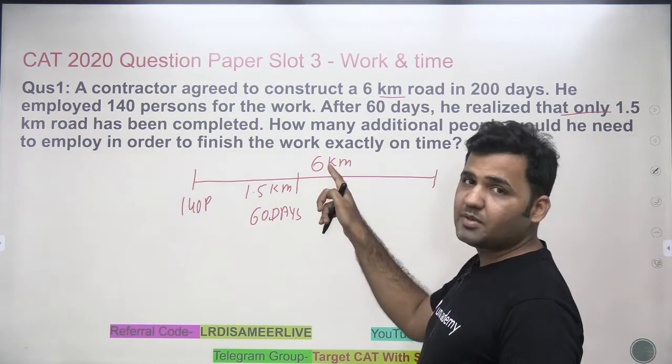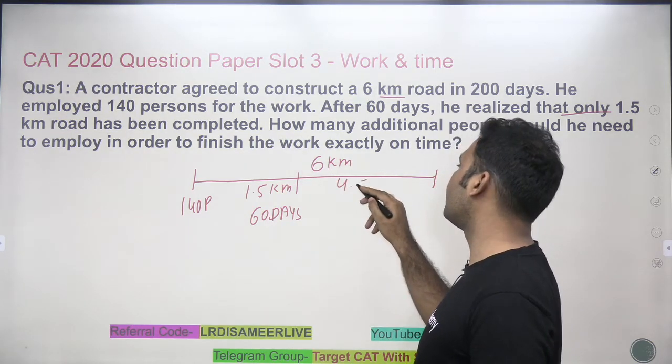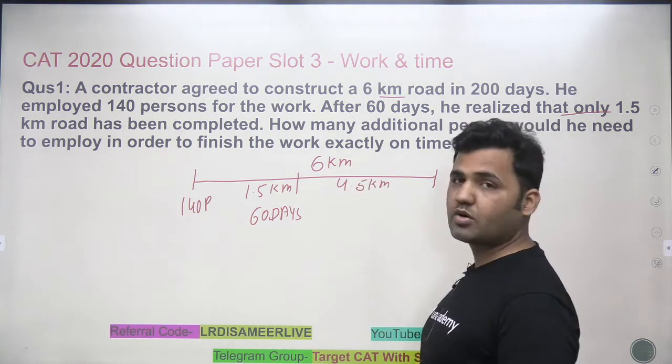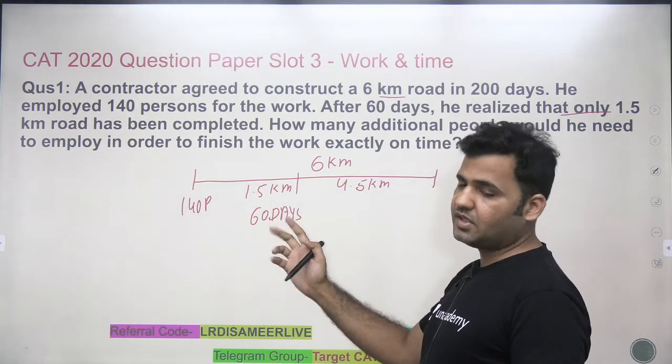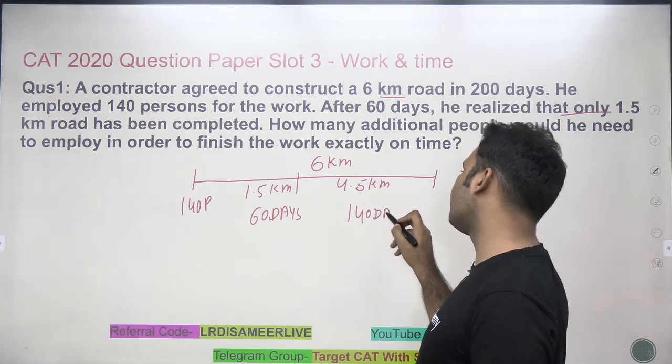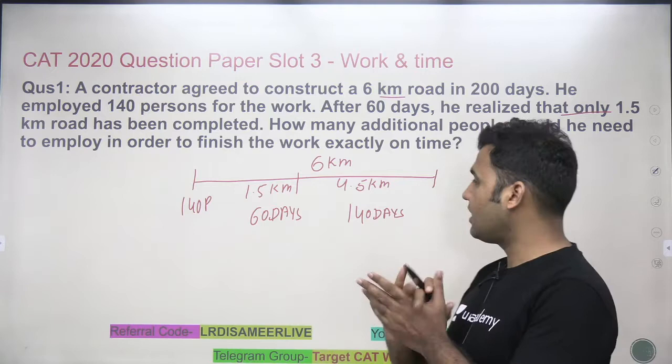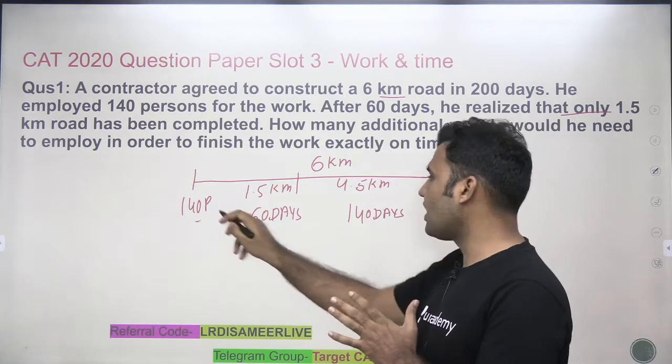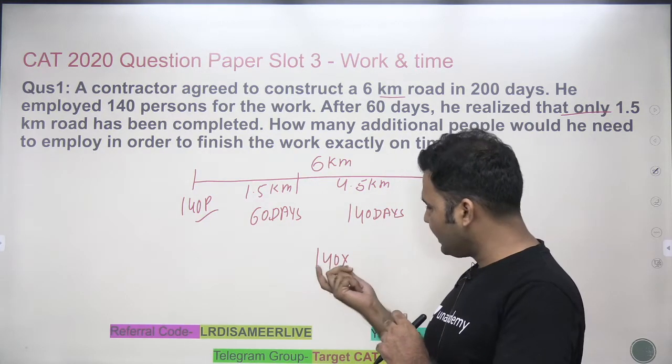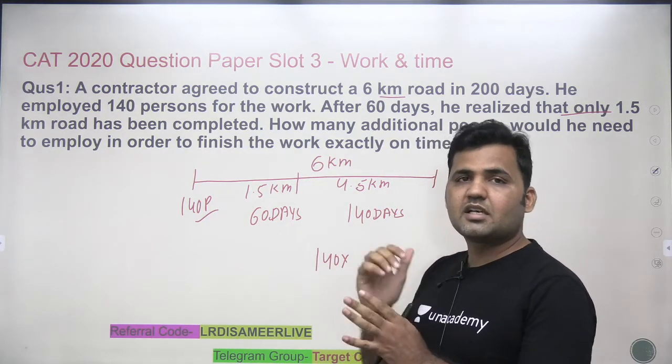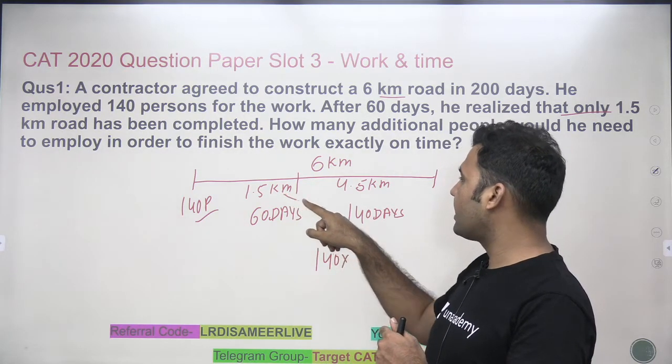You see that 6 kilometer road was supposed to be constructed. Only 1.5 kilometer has been made. So you are left with 4.5 kilometer more road to construct. And days past are 60 and you are left with 140 more days. A very simple question. You just see that initially you have 140 persons. In chain rule you are supposed to see that this 140 persons will get increased or get decreased with every factor. Now if you look at the work here, work is getting 3 times.